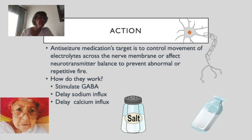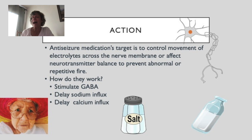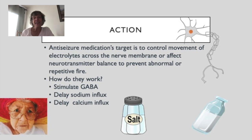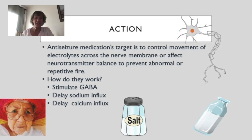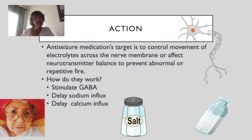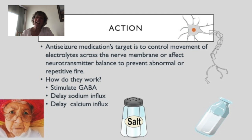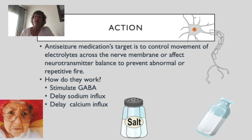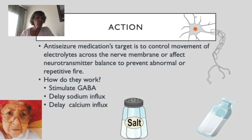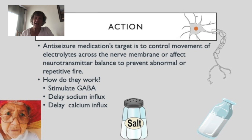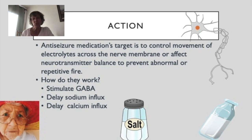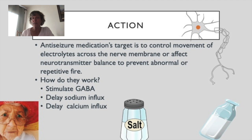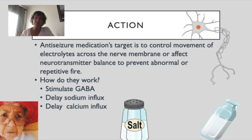One way is to enhance GABA — gamma-aminobutyric acid. GABA is an inhibitory neurotransmitter that quiets the brain down. We can also delay sodium influx — sodium increases the action potential and makes the nerve fire, so calming those channels reduces abrupt nerve firing. We can also delay calcium influx, because without calcium, neurotransmission is impossible.